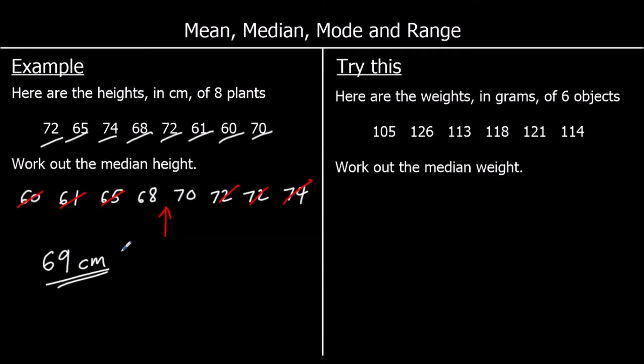We could also work this out by finding the mean of those two middle numbers — add them up and halve them to find the midpoint. So in this case, the median is sixty-nine centimeters.